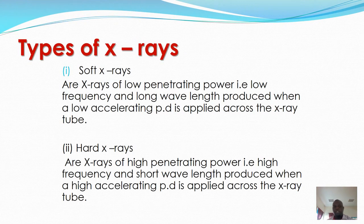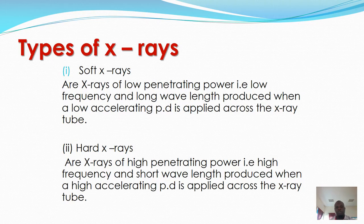There are two types of X-rays: soft X-rays and hard X-rays. Soft X-rays are X-rays of low penetrating power, having low frequency and long wavelength, and are produced when a low accelerating potential difference is applied across the X-ray tube. Hard X-rays are X-rays of high penetrating power, having high frequency and short wavelength, and are produced when a high accelerating potential difference is applied across the X-ray tube.